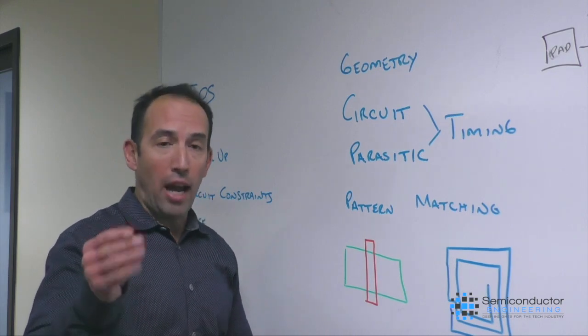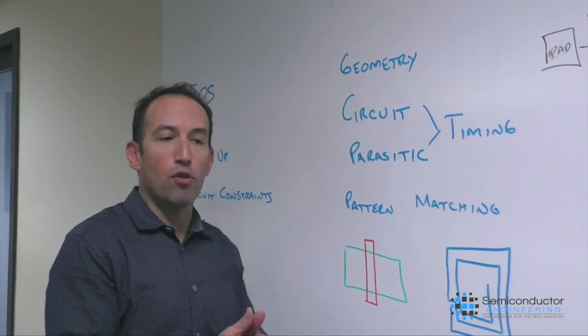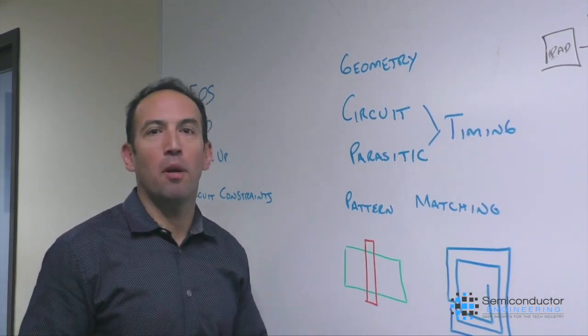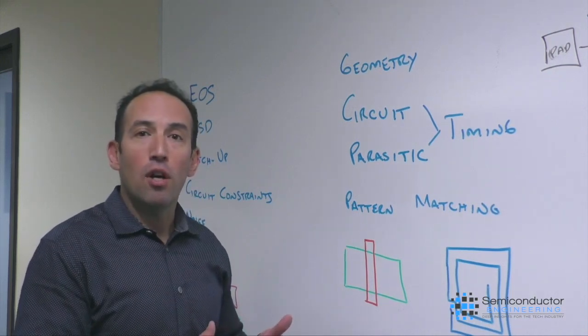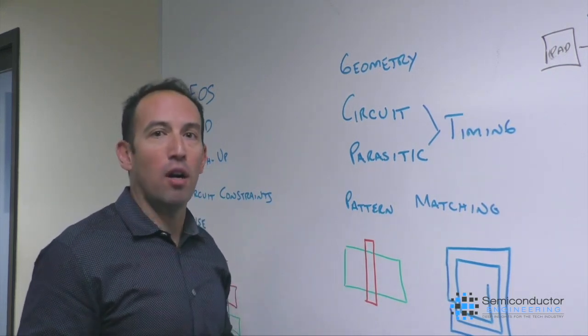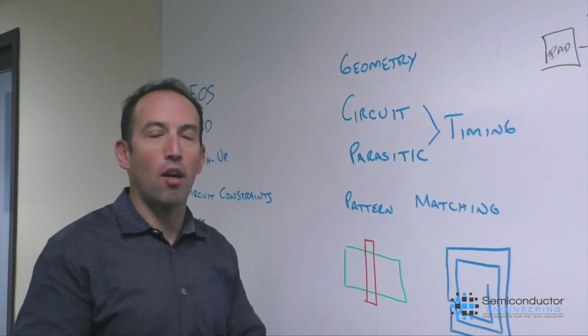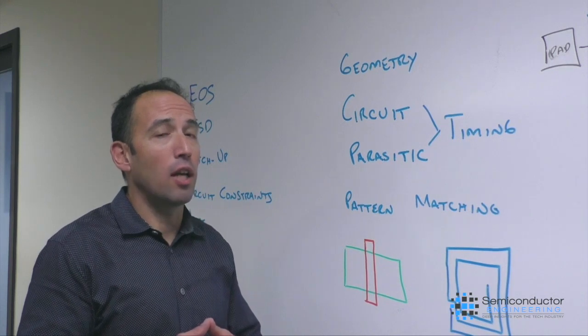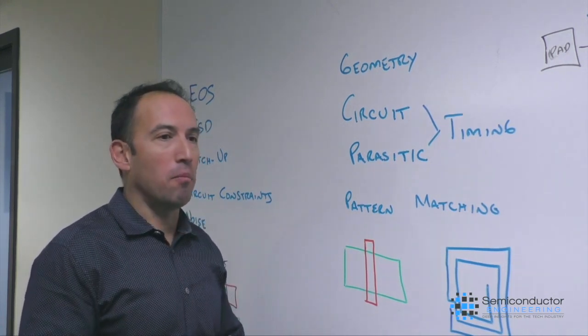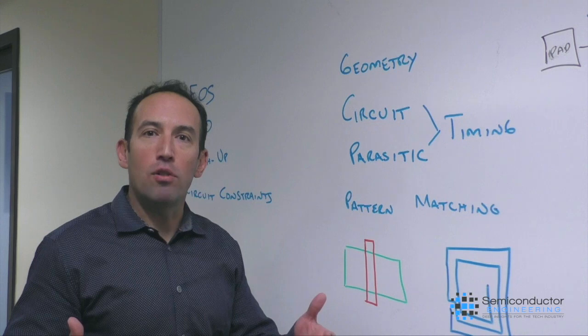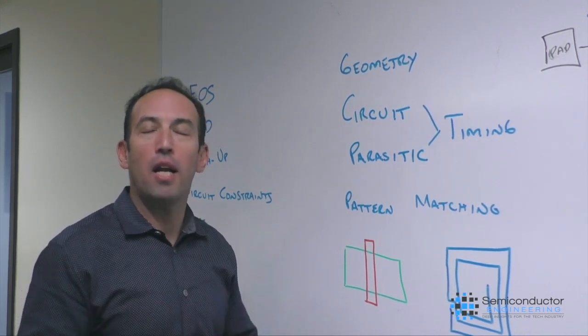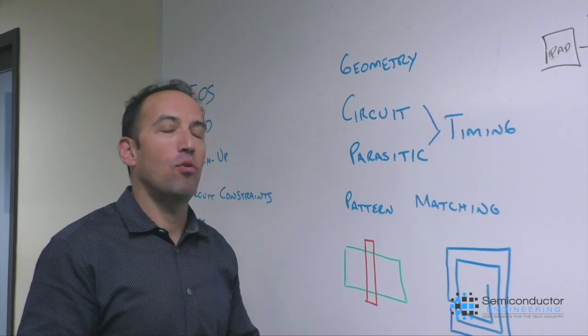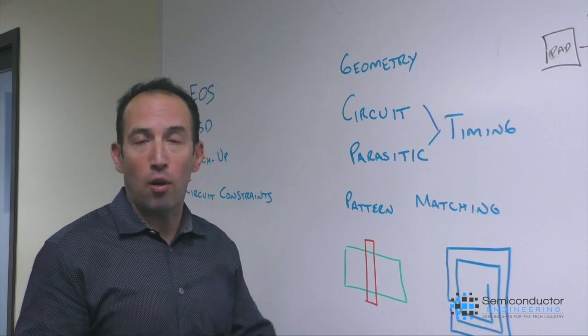Excellent question. As you mentioned, you've got design complexity. And first off is just the scale of designs. At every leading node, we're doubling, tripling the number of transistors. Even at legacy nodes, you're putting on different types of content. You're putting on analog, you're putting radios, in addition to the digital content that you're creating. You're probably also dealing with multiple power islands. Even at legacy nodes, you're dealing with 5 volts and 50 volts in a variety of different voltage regions that add to the complexity and add to the opportunity for electrical failure that you want to check against.